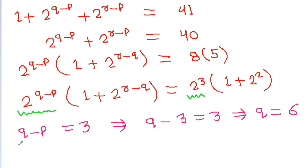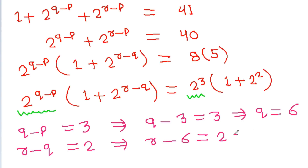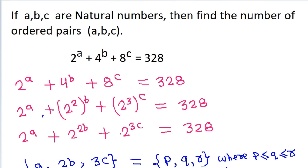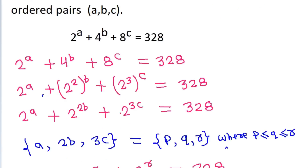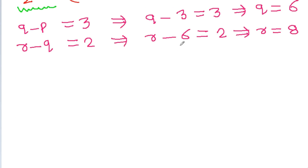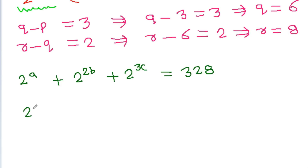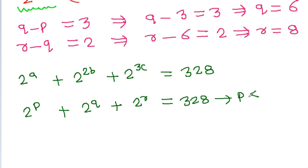Also, 1 + 2^(r−q) = 5, so 2^(r−q) = 4 = 2^2, meaning r − q = 2. With q = 6, we get r = 6 + 2 = 8. So the unique solution is p = 3, q = 6, r = 8.